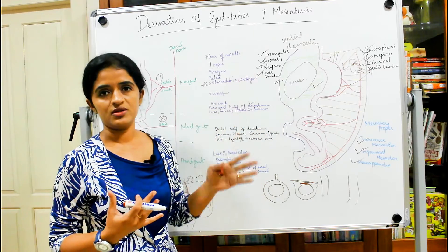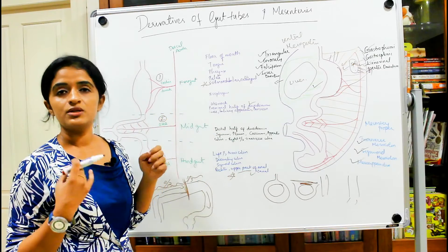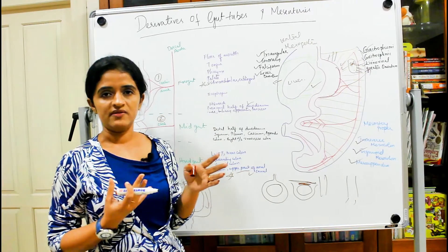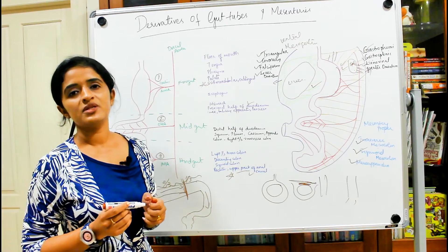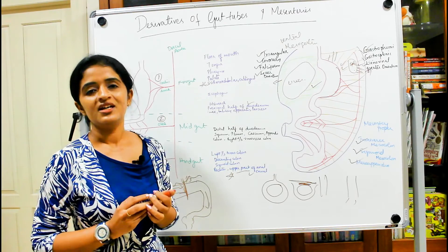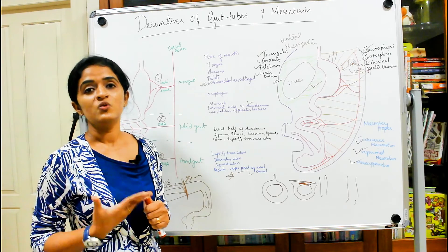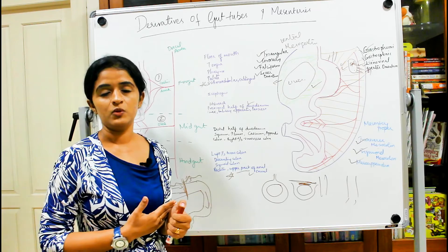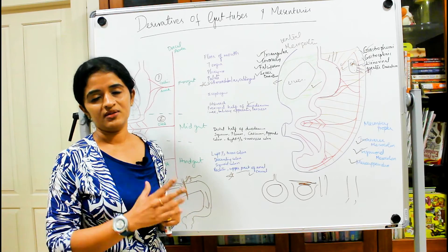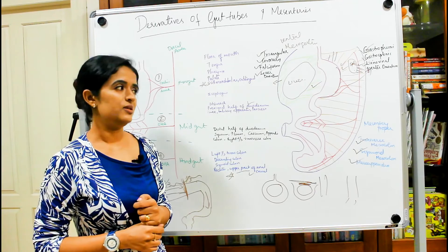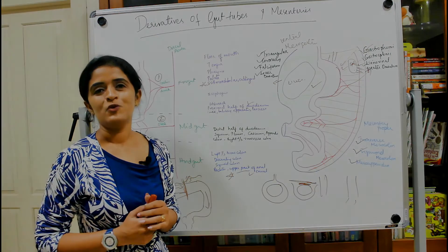These are the derivatives of the mesentery — reformed as different ligaments and folds — whose main purpose is to provide blood vessels to the developing gut. In the coming sessions we will deal in detail with the development of the duodenum, rotation of the intestinal loops, and the final placement of all gut tube derivatives within the abdominal cavity.